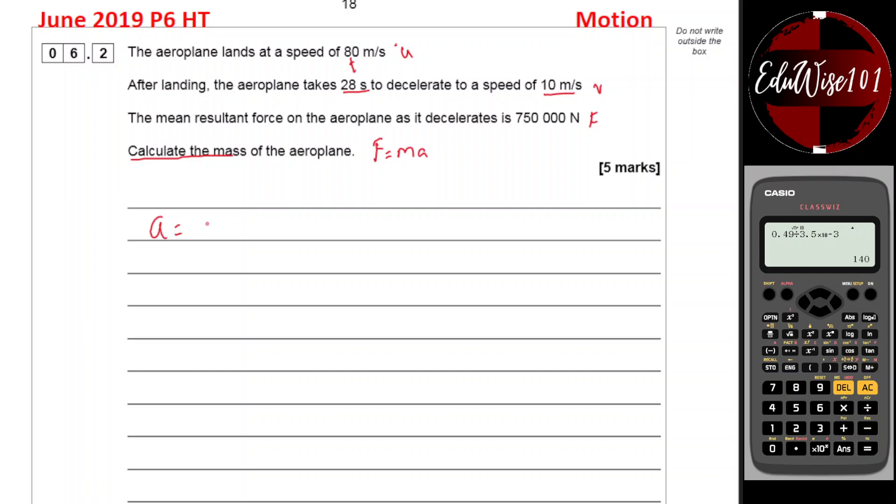Acceleration is the change in velocity divided by time. So that's final velocity minus the initial velocity divided by the time. So final velocity was 10 minus the initial velocity was 80 divided by 28. That's minus 70 divided by 28. So the acceleration is minus 2.5 meters per second squared.